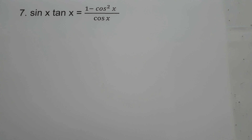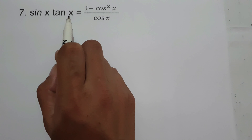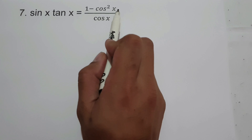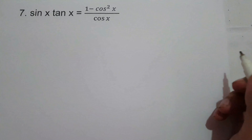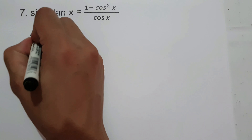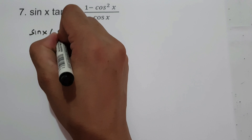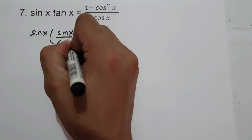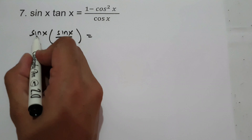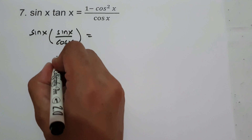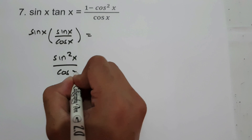On example number 7, we have sine x times tangent x equals 1 minus cosine squared x over cosine x. To prove the given identity, let us write sine x, and let us have tangent x as sine x over cosine x. And let us simplify, sine x times sine x, that is sine squared x over cosine x.